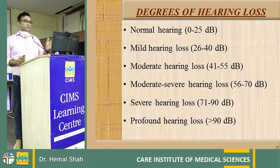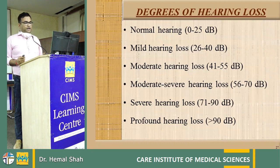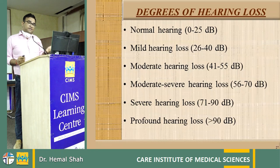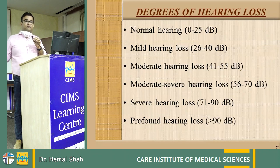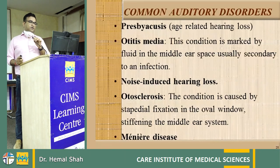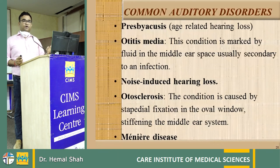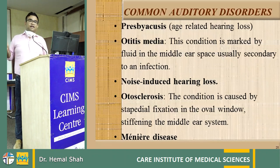Degrees of hearing loss can be identified as follows: normal hearing is 0–25 dB; mild hearing loss is 26–40 dB; moderate is 41–55 dB; moderately severe is 56–70 dB; severe is 71–90 dB; and profound hearing loss is more than 90 dB — at this level, certificates of deafness are issued by the government.